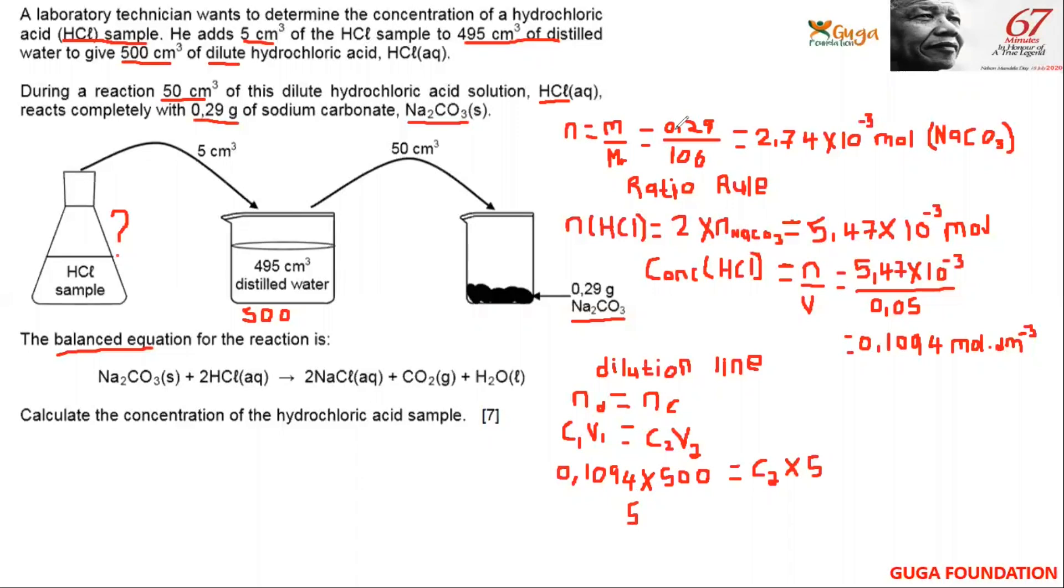This will equal to 54.7 equals C₂ multiplied by 5. Now you can divide both sides by 5, and you get C₂ equals 10.94 mole per dm³. That will be the concentration of the concentrated original hydrochloric acid.